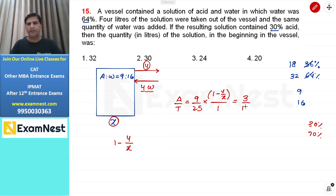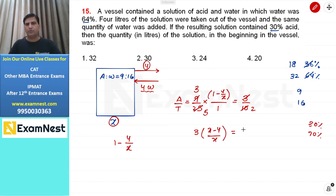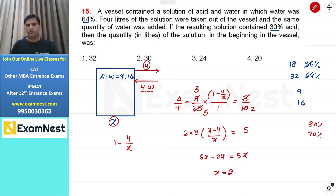Final ratio = 30 upon 100 = 3 upon 10। Equation: (9/25) into (1 - 4/x) = 3/10। Cross multiply: 3 into (x minus 4) divided by x = 5, फिर 2 into 3 = 6, so 6x minus 24 = 5x, x is equal to 24। Third option हमारा answer होगा।